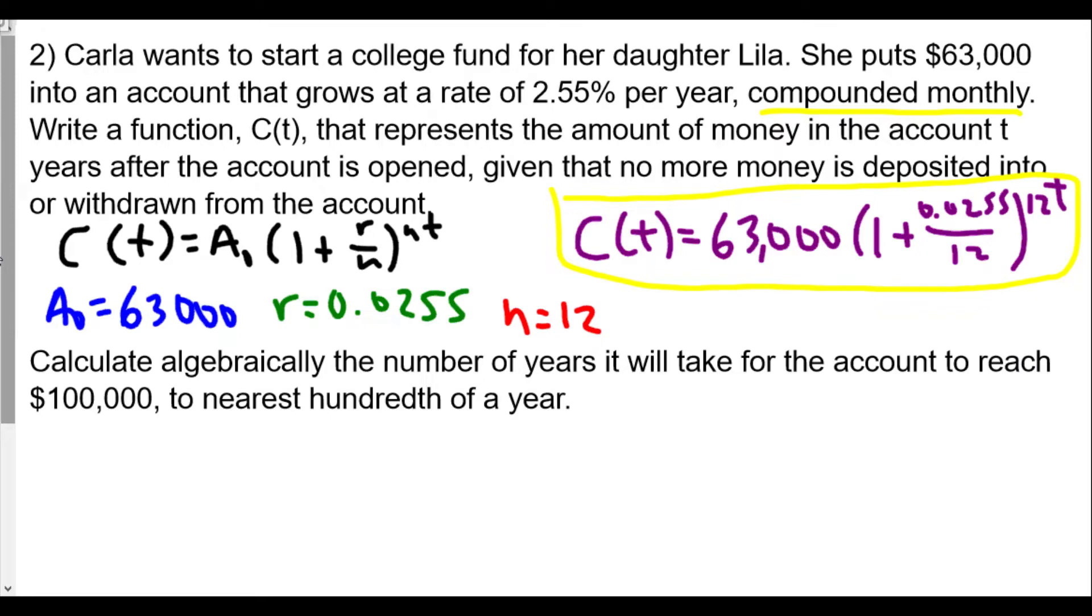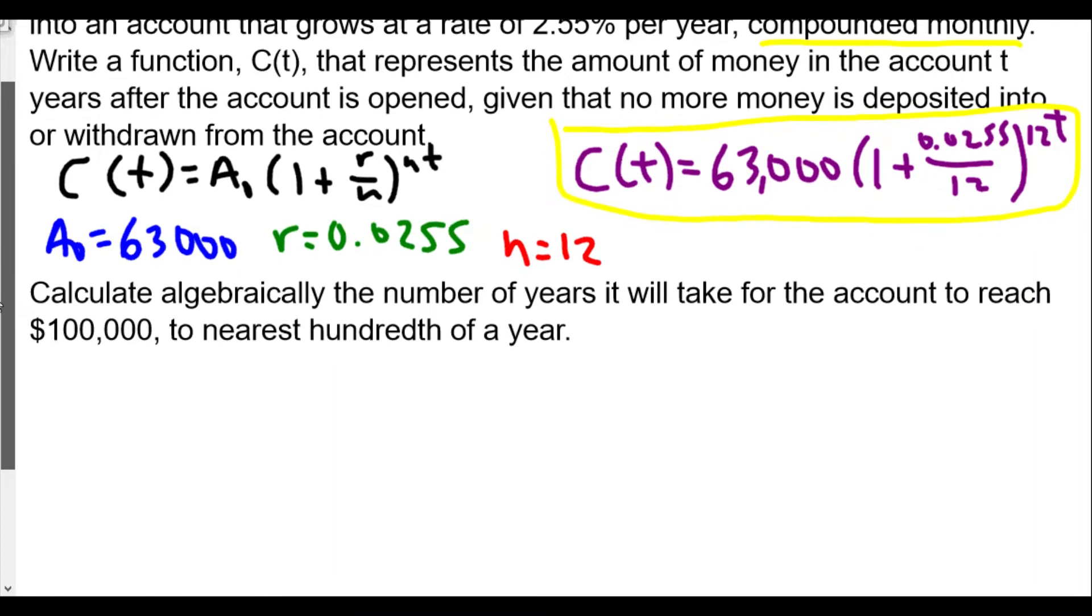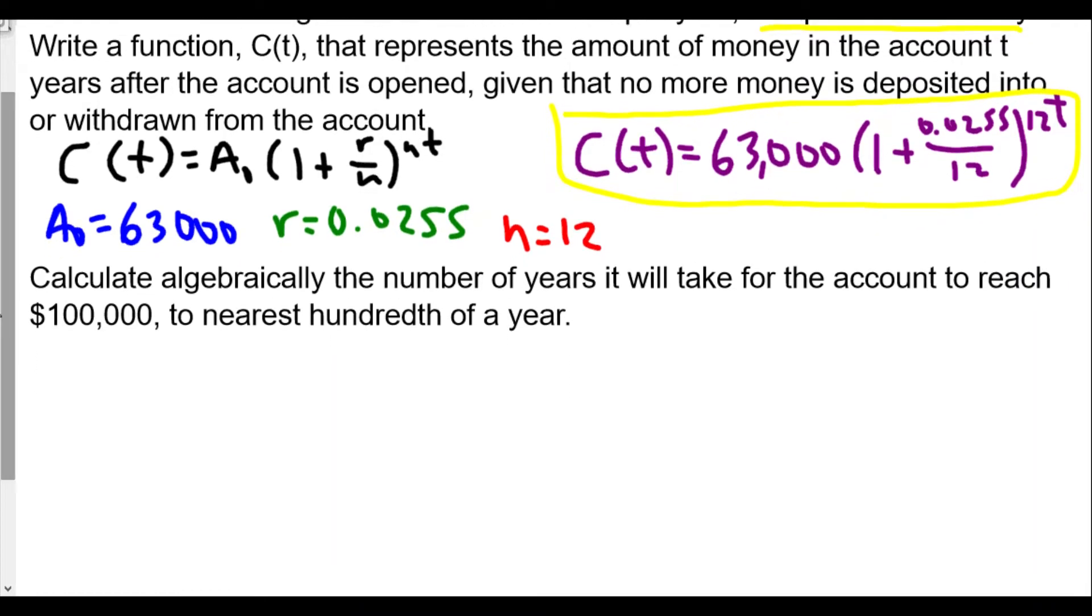Now we want to calculate algebraically the number of years it will take for the account to reach $100,000 to the nearest hundredth of a year. Nearest hundredth of a year means two decimal places. When dealing with exponents we have to be very careful. I'm going to encourage you not to round off because you might get the incorrect answer due to rounding error and lose points.